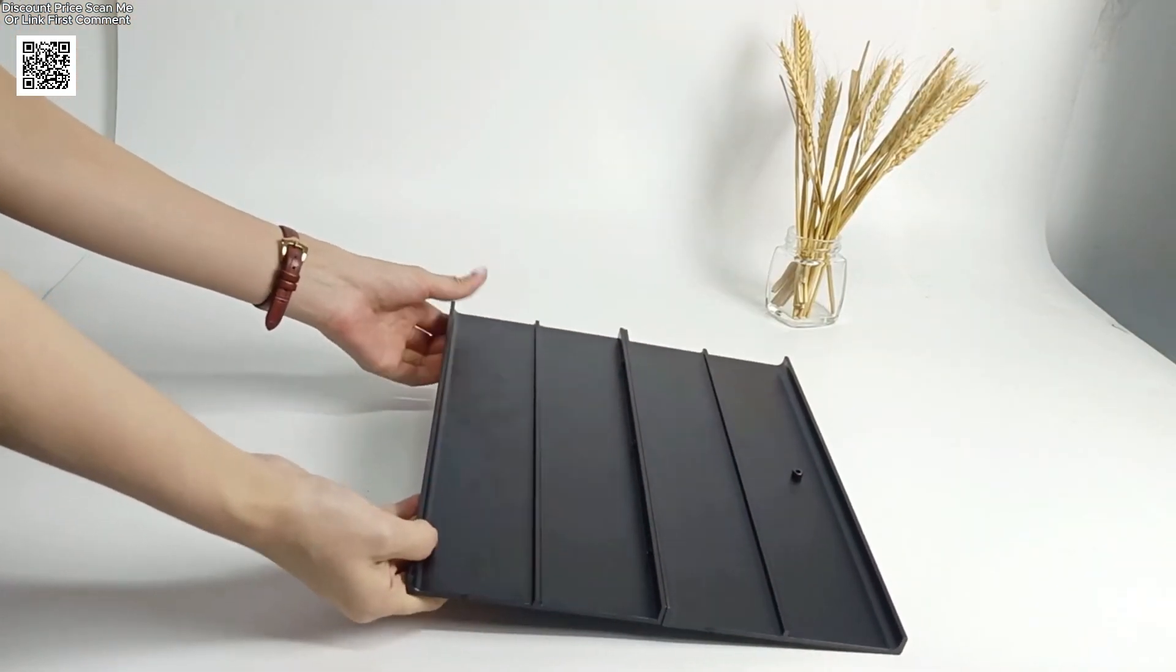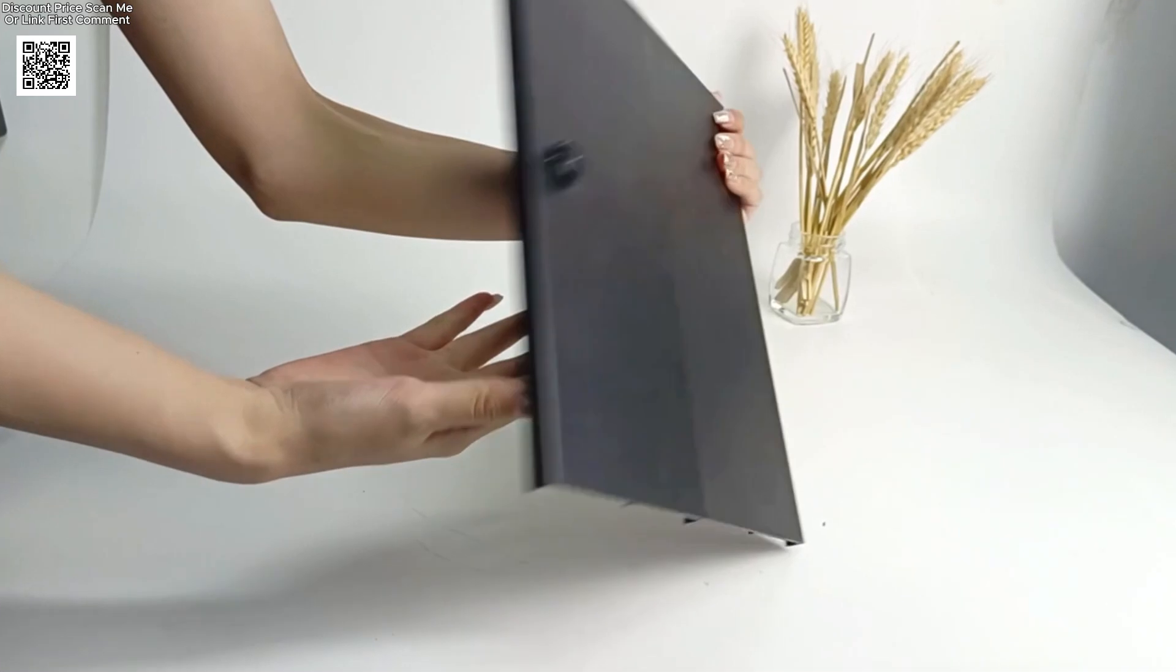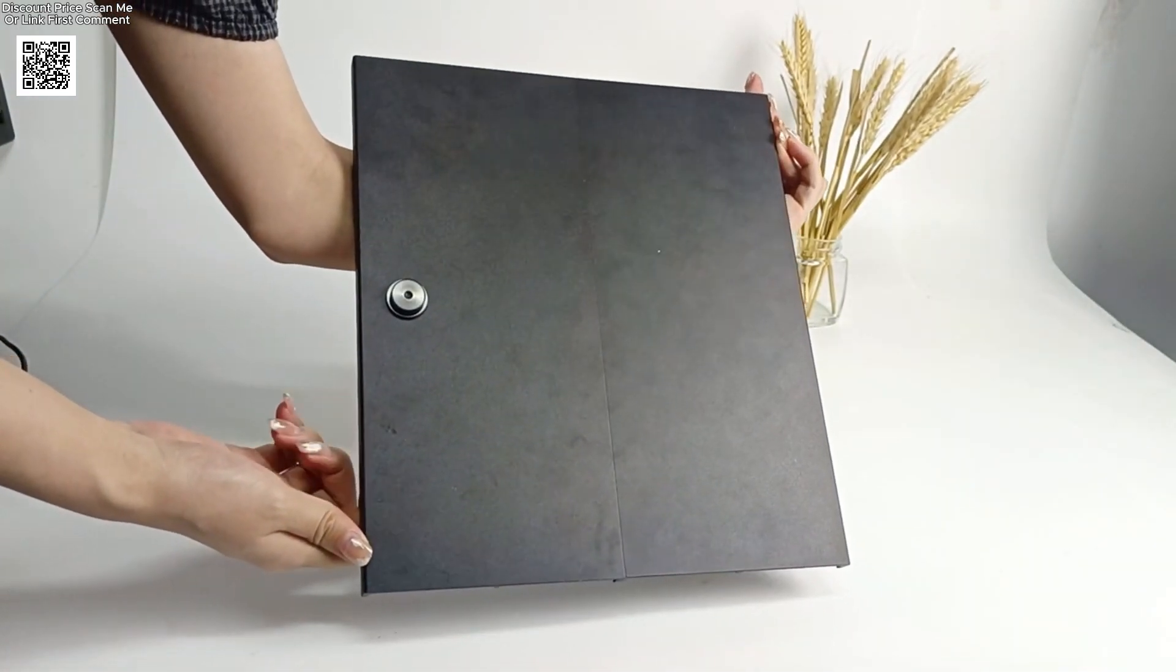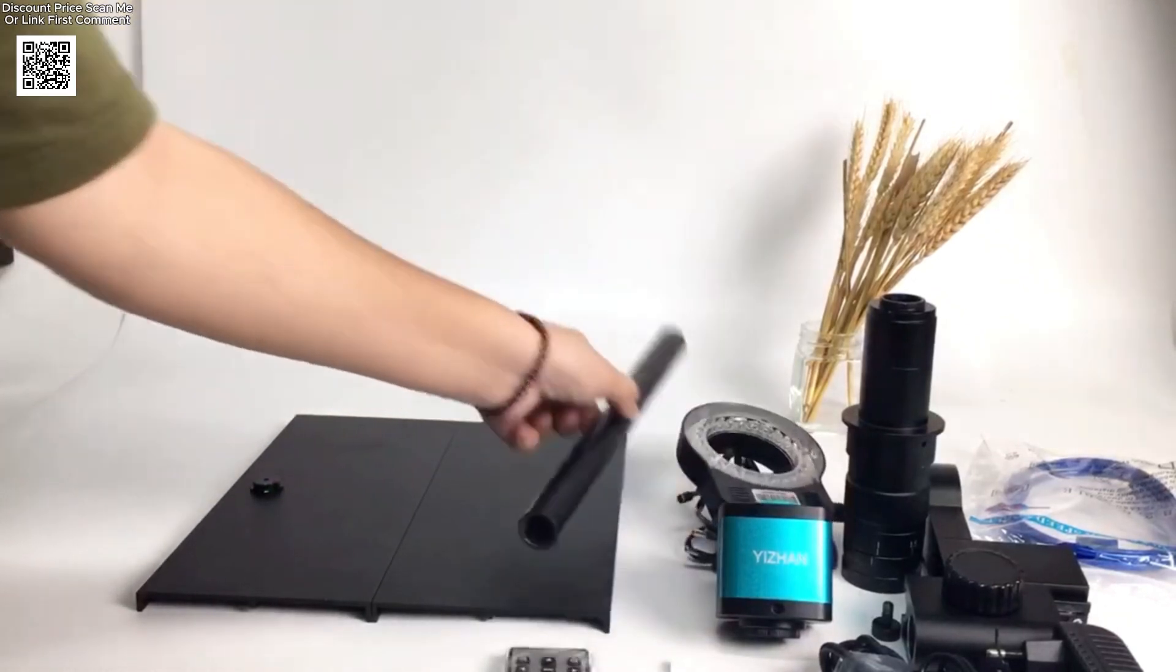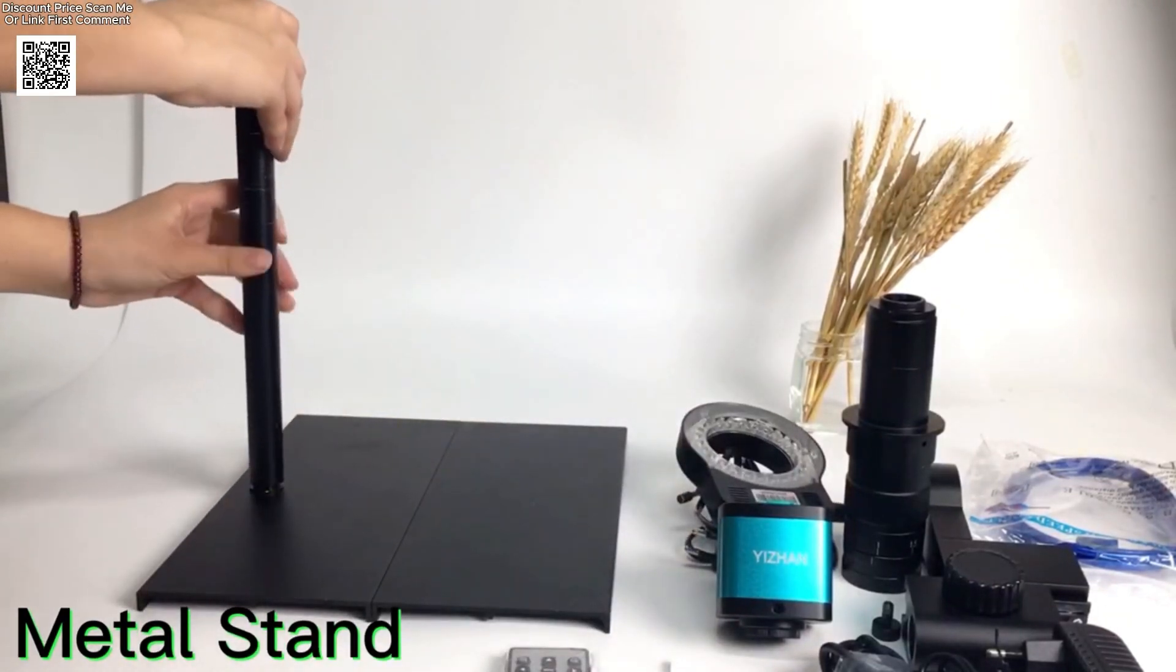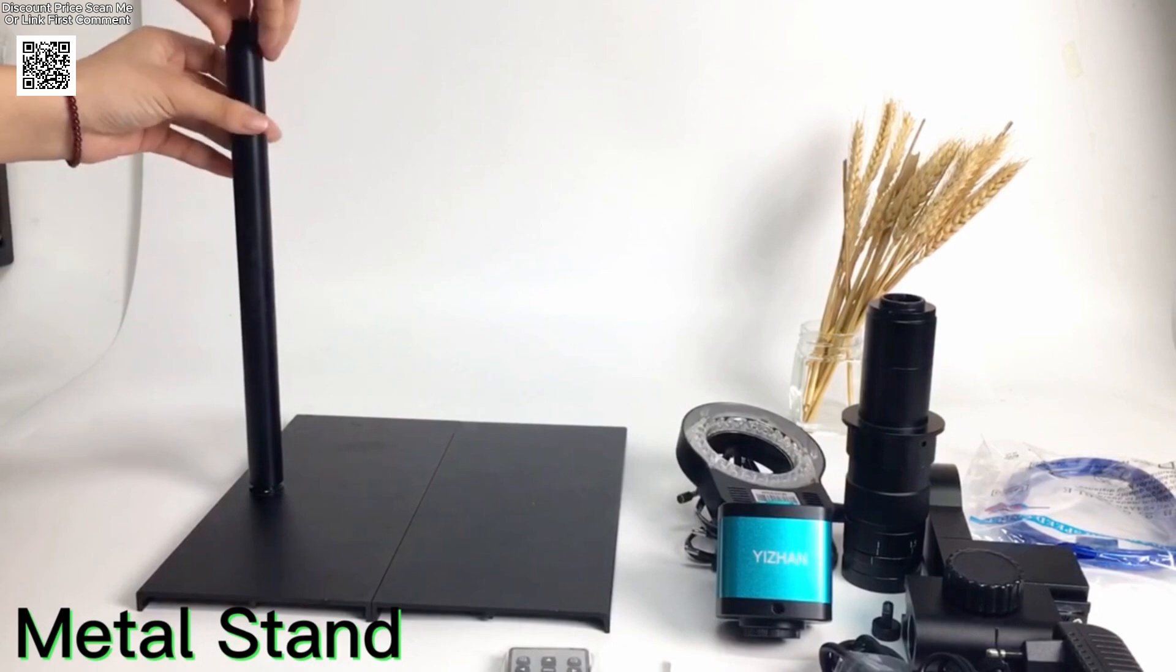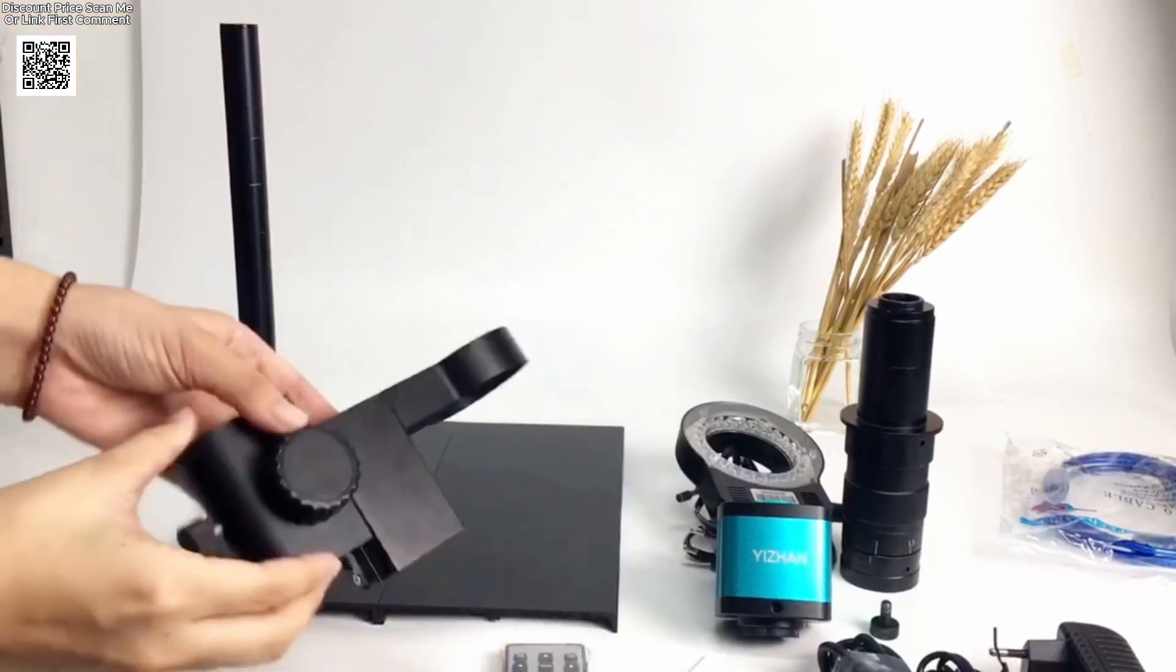Store them on a TF card up to 32 gigabytes. The system supports 5x digital zoom, manual and automatic white balance, and customizable crosshair and grid lines for precise measurements.